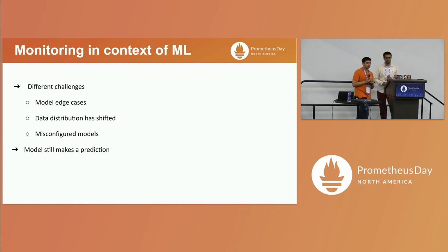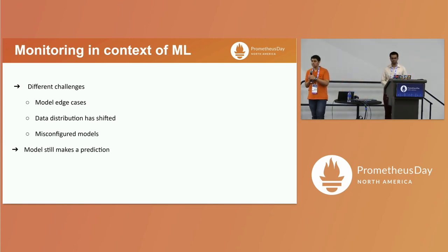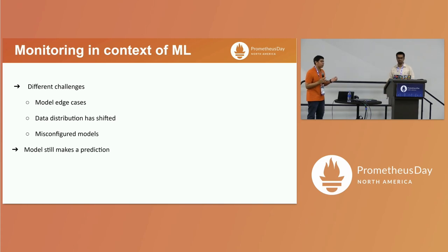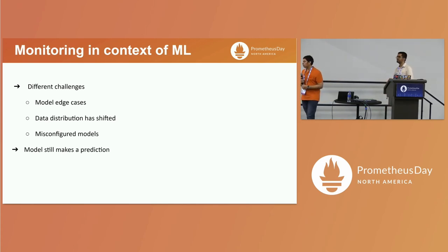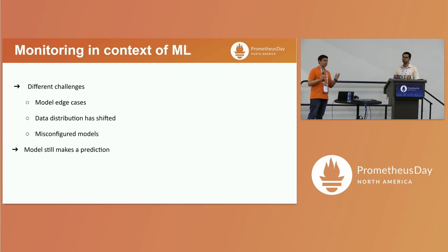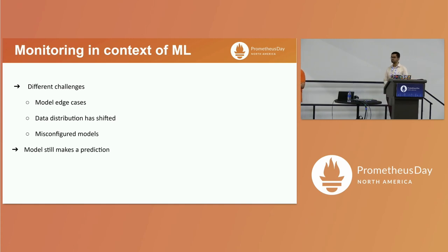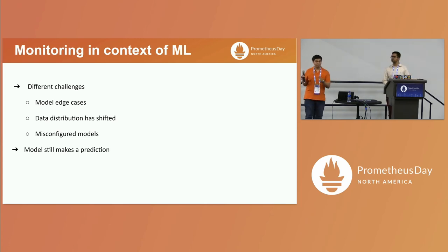Two key challenges I want to highlight: monitoring in the context of machine learning is pretty different from how you might have been using Prometheus earlier. The system goes through properly — there is no error, no system failure, no SLO failure — the model still makes a prediction, but you are still doing something wrong. The model does not make sensible predictions. Everything works perfectly, there is no error, but you still need to be able to monitor in those situations.